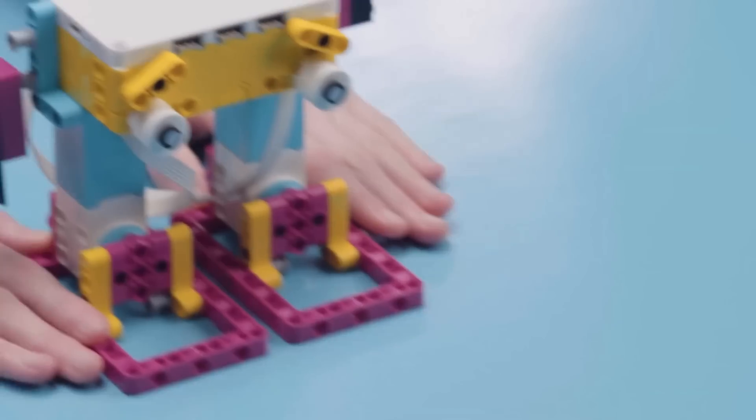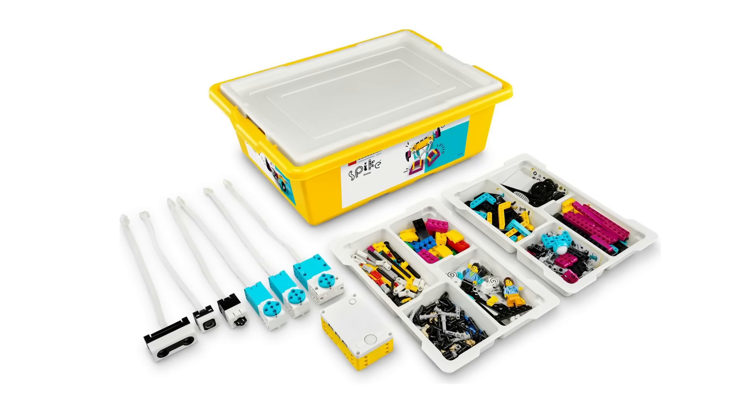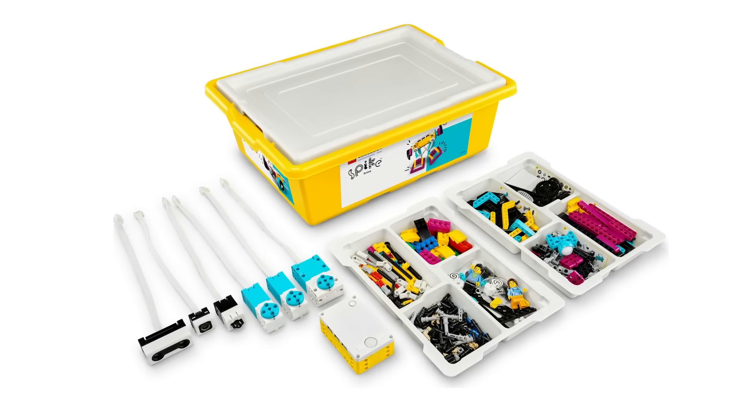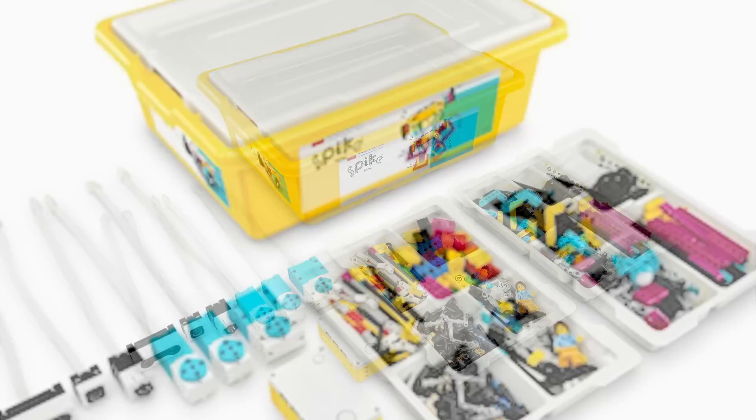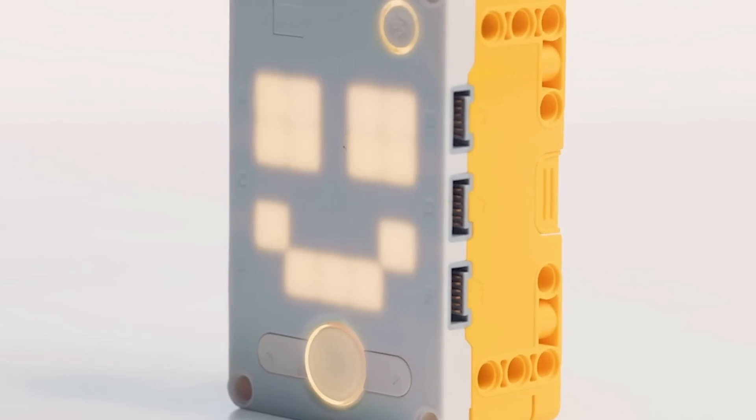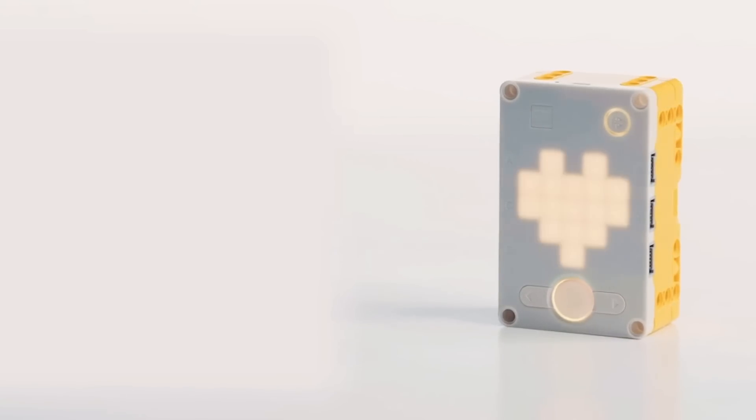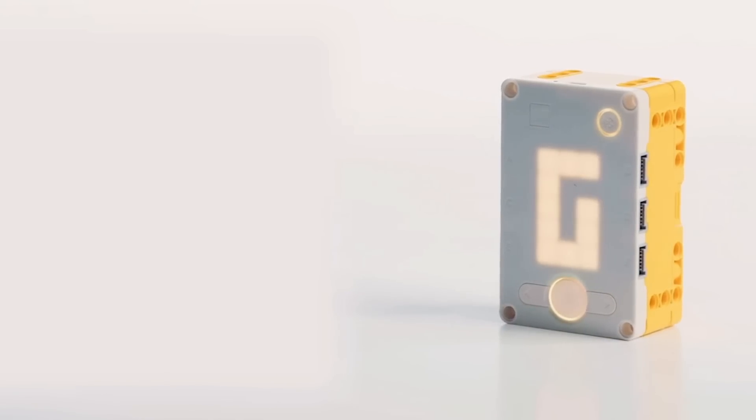This is LEGO Spike Prime. At first glance, it may seem to be largely identical to the Mindstorms sets. However, once you take a little bit of a closer look, though, the differences become more obvious. The new Technic Large Intelligent Hub, as it's officially called, is noticeably smaller than the EV3, allowing it to better fit into smaller models and younger hands.